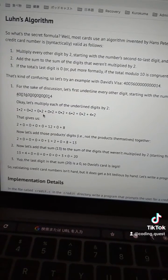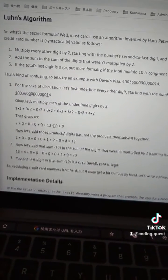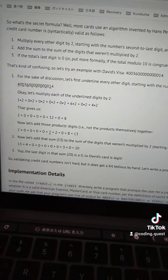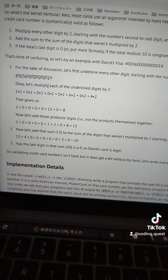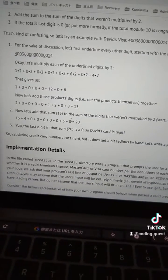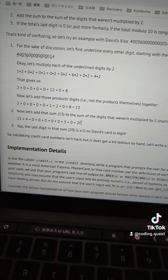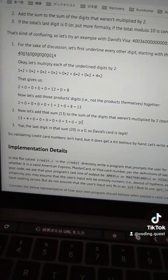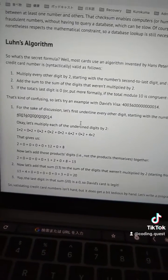multiply them by two, and then add the digits of those products, then add the numbers in between that you didn't check for before. And if you get a number ending in zero, then it's a legit credit card or debit card.